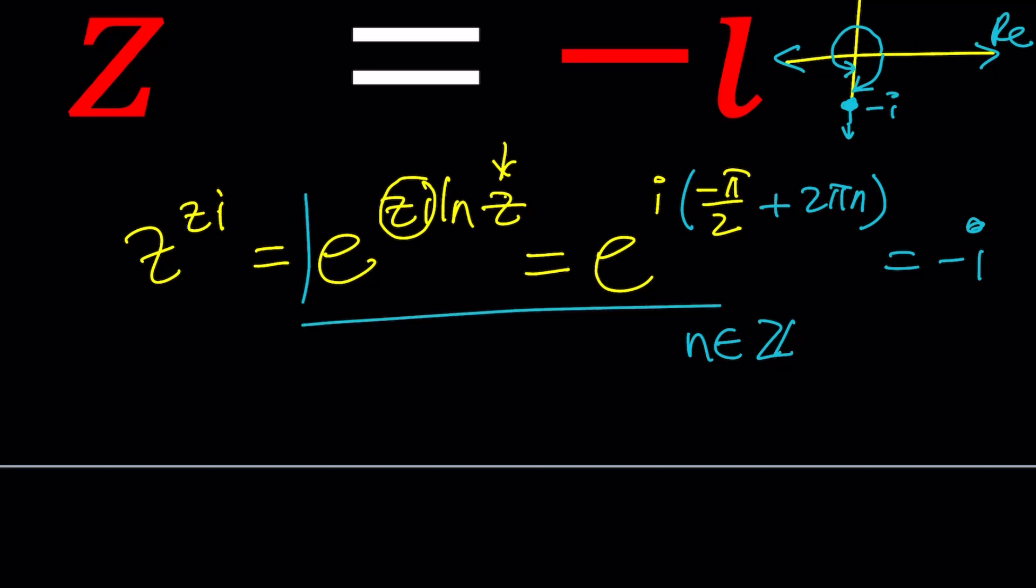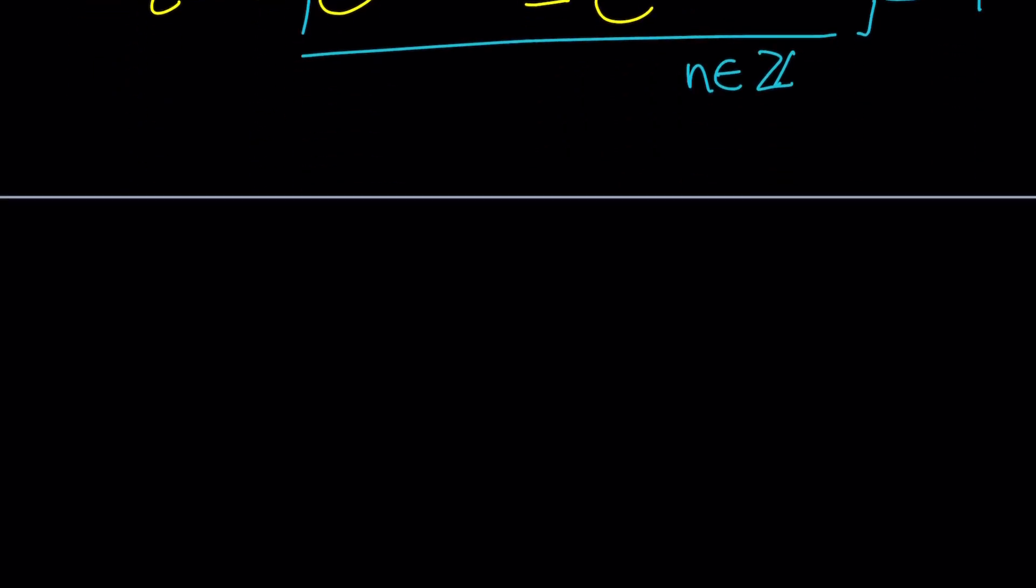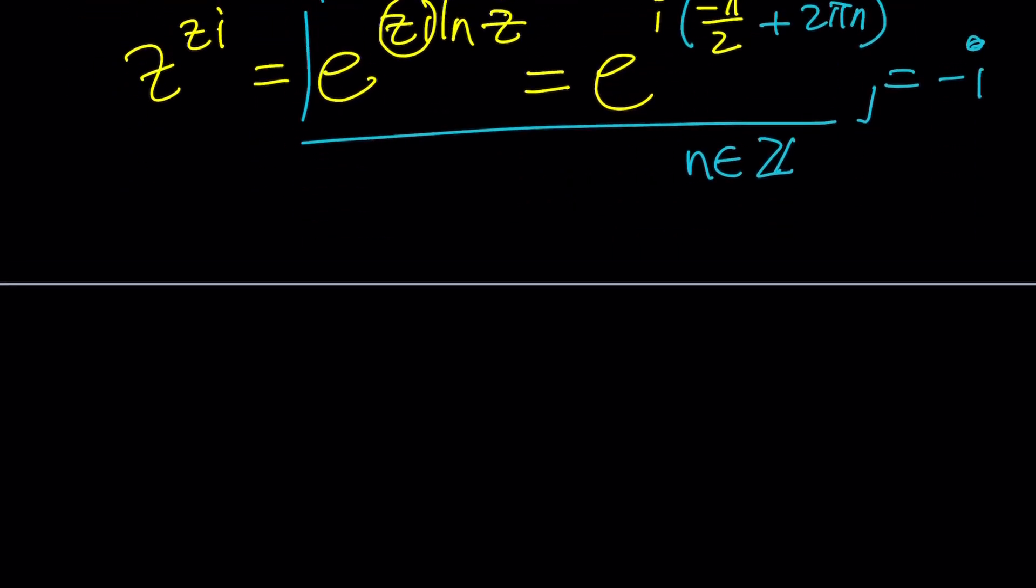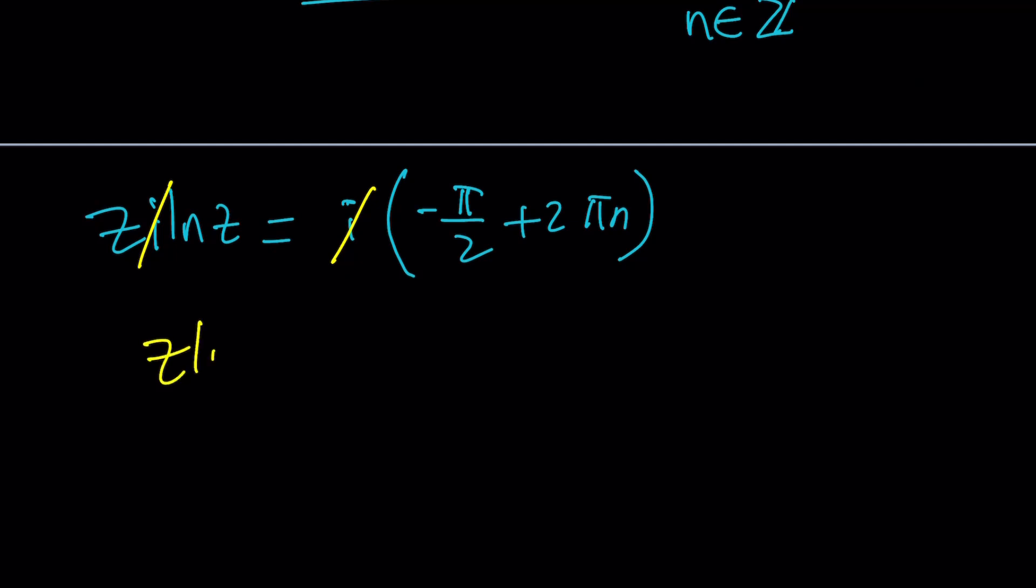Now we have this equality and what we can do with that is amazing because we can just make up an equation from here. So by bringing down the exponents like natural log both sides, we're going to get zi ln z equals i times negative π over 2 plus 2πn. Again, n is an integer. Obviously i cancels out because it's not zero and we get z ln z equals negative π over 2 plus 2πn.